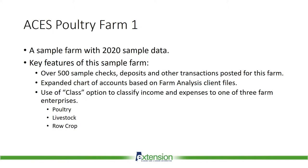If we're going to be discussing farm accounting, we need a sample farm QuickBooks file, so we created the ACES Poultry Farm Number One. The key features include over 500 sample checks, deposits, and other transactions posted for the 2020 crop year, an expanded chart of accounts, and use of the class option to classify income and expenses to one of three farm enterprises: poultry, livestock, and row crop. This class feature really can help us see which farm enterprises make the most money and which need to be reviewed for possible changes.